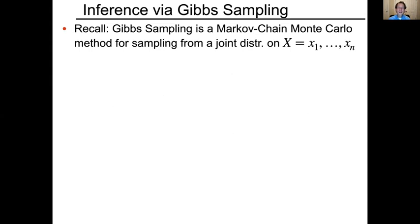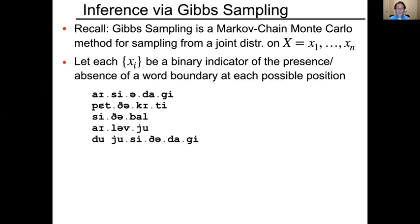For inference in this model, we can use Gibbs sampling again, as we did with the phonetic category learning problem. Gibbs sampling is a Markov chain Monte Carlo method for sampling from a joint distribution on a collection of random variables X_1 through X_N. In our case, the X's are binary indicator variables positioned at each possible word boundary position, where 0 means no boundary and 1 means there is a word boundary. The gray dots indicate the possible word boundary positions — the collection of X_i for this corpus.